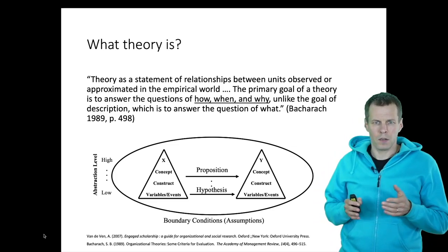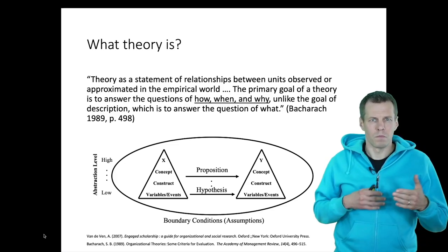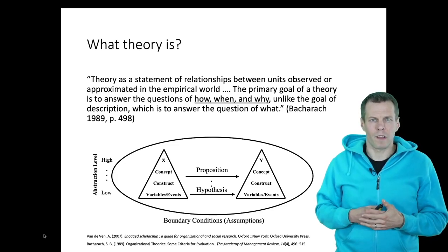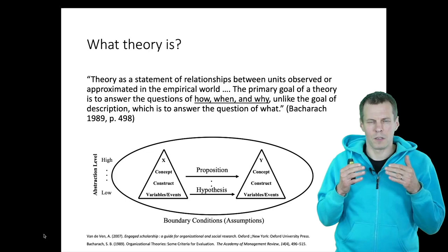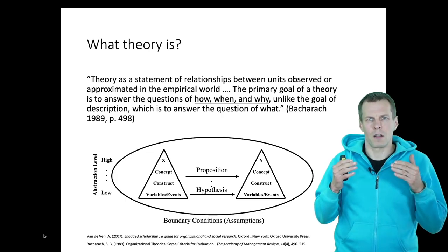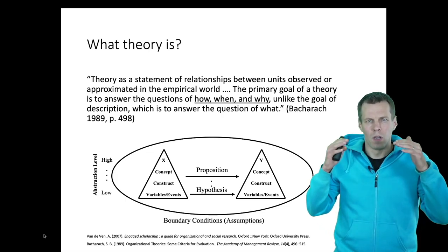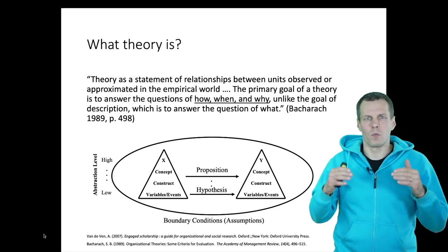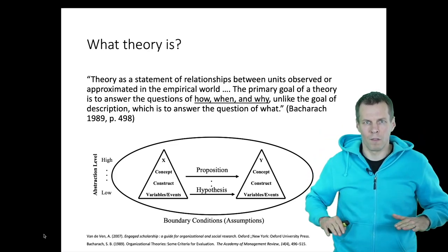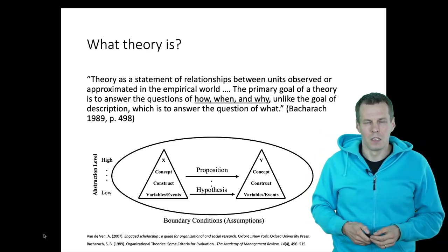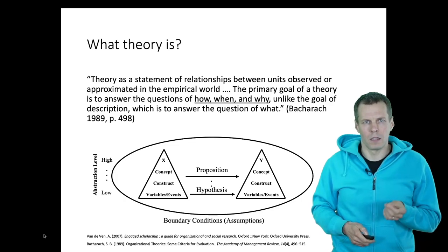We can see here this figure from Baccarat. There are different levels of abstraction: the abstraction of proposition and then the abstraction of hypothesis. We have high-level abstraction — the concepts — and low-level abstraction — the data. So how do we link the theory and the data?